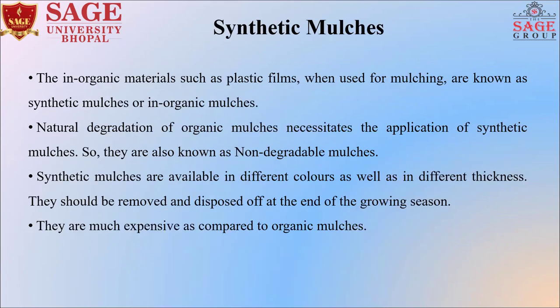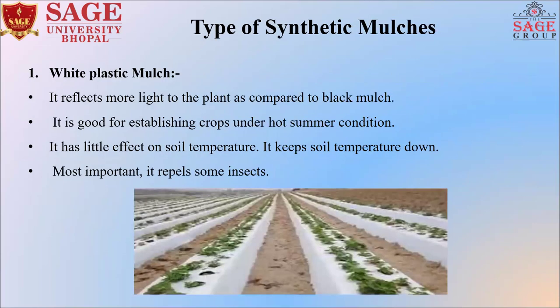Next are synthetic mulches. Inorganic materials such as plastic film when used for mulching are known as synthetic mulches or inorganic mulches. Since organic mulches naturally degrade, synthetic mulches are used as non-degradable alternatives. Synthetic mulches are available in different colors as well as different thicknesses. They should be removed and disposed of at the end of the growing season. They are much more expensive compared to organic mulches.